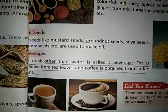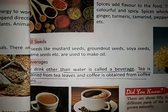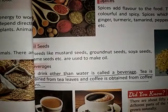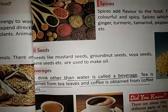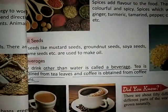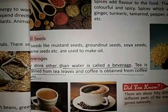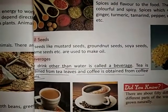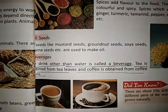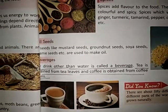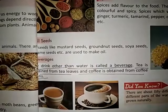Seeds. Seeds like mustard seeds, groundnut seeds, soya seeds, sesame seeds, etc. are all used to make oil. Any drink other than water is called a beverage. Tea is obtained from tea leaves and coffee is obtained from coffee beans.